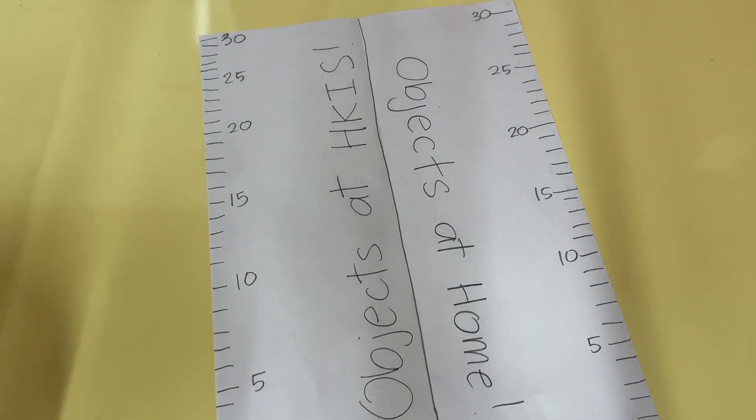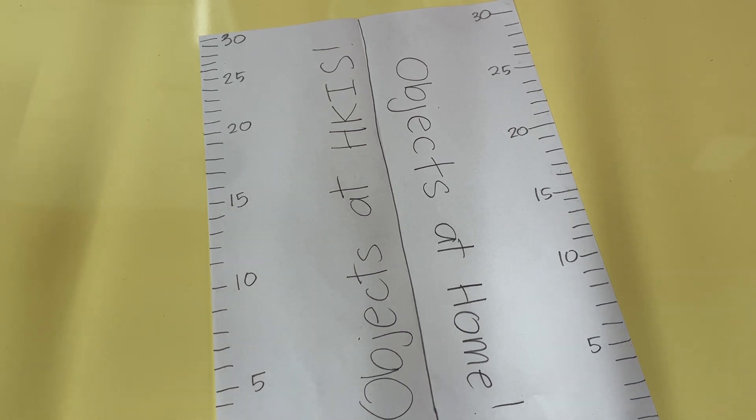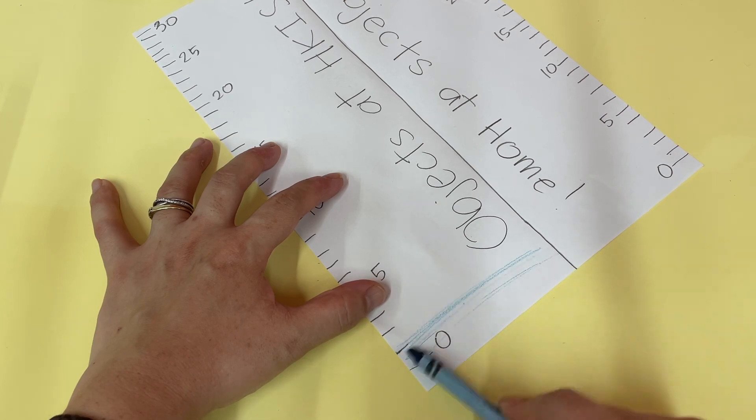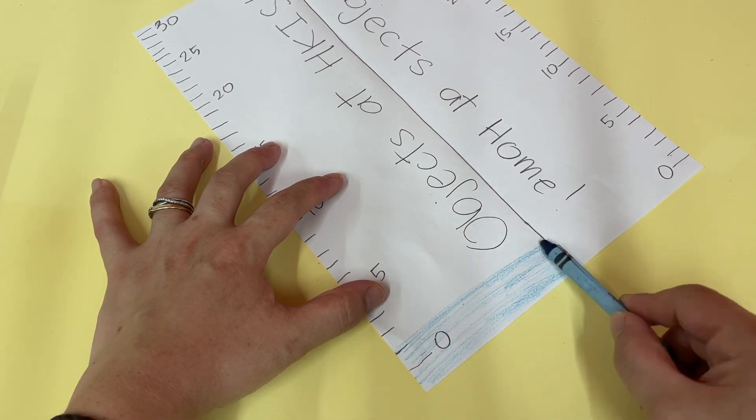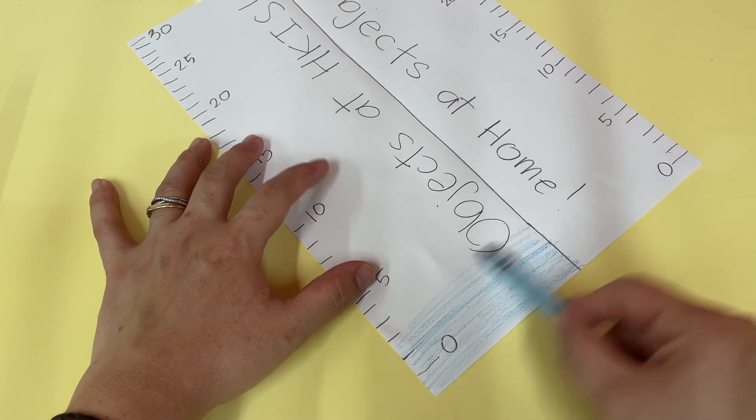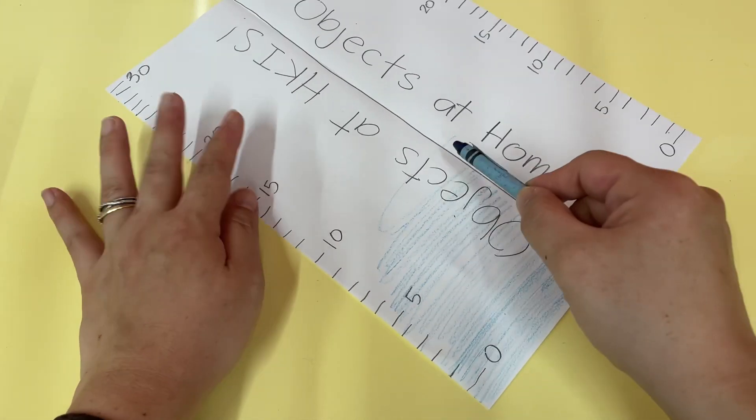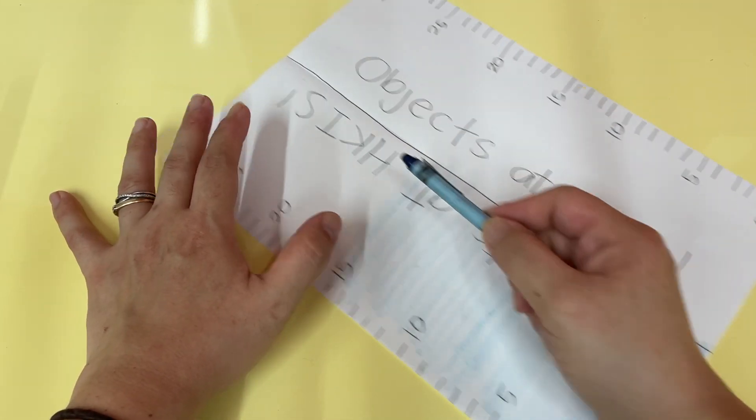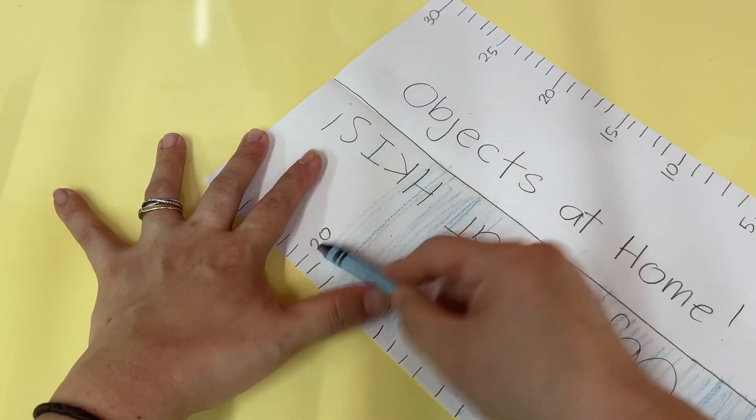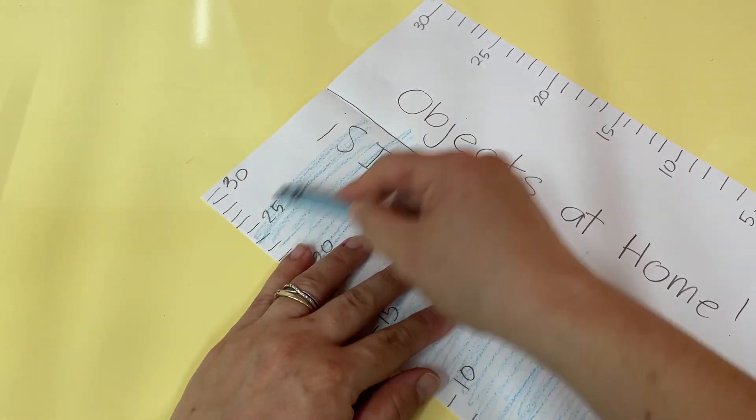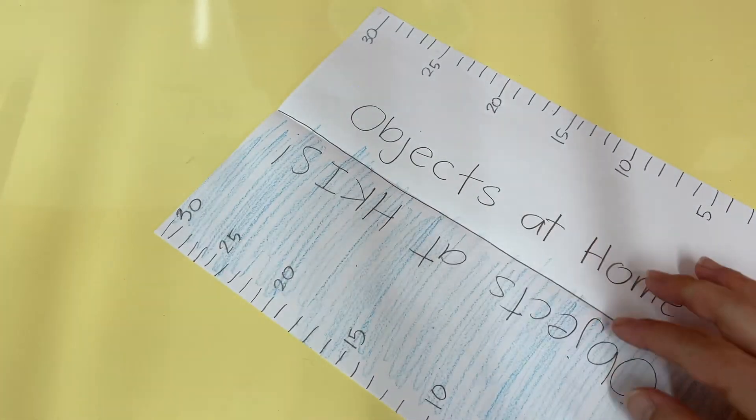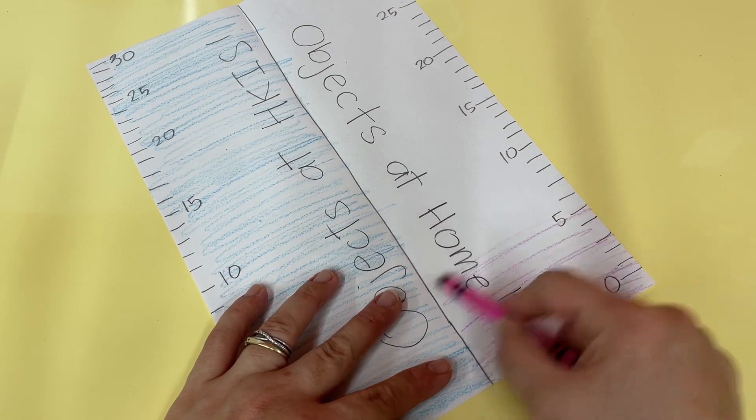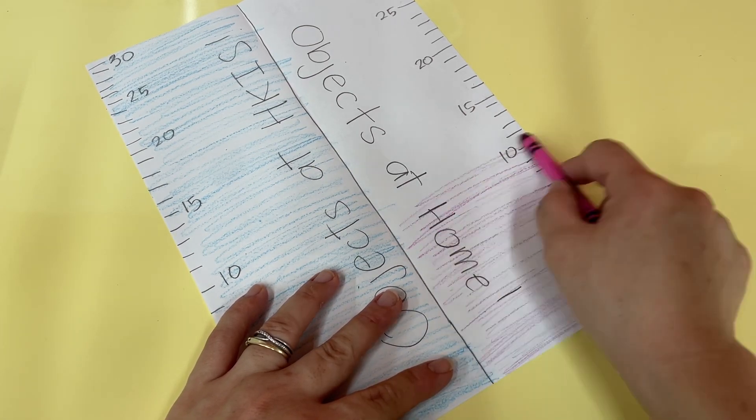And then, because it's a ruler, you can color it any way you want. So I'm going to color mine in blue. Got blue here. My objects at H-K-I-S. And then maybe pink for objects at home, or purple. There you go.